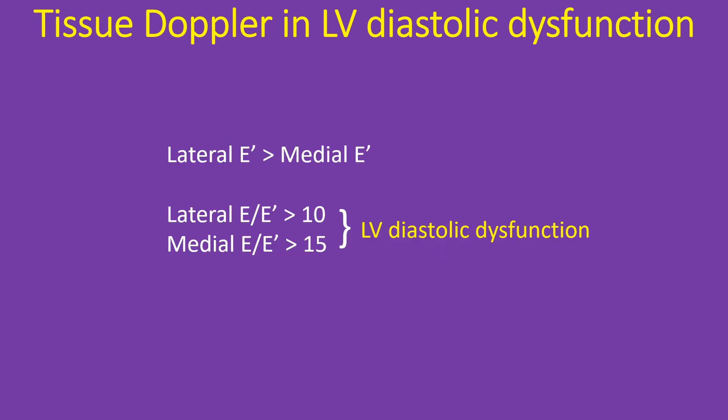The E velocity at the lateral mitral annulus is different from that at the septal mitral annulus — septal E prime is slightly lower than lateral E prime. E by E prime at the lateral mitral annulus more than 10, and E by E prime at the septal mitral annulus more than 15, indicates left ventricular diastolic dysfunction.